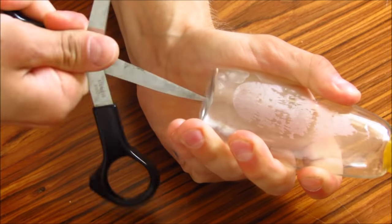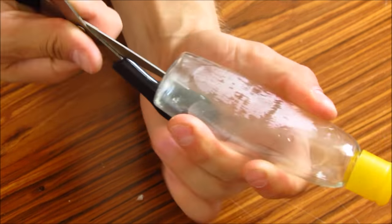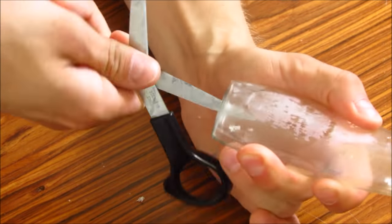Next, take your travel size shampoo bottle. This one is Johnson's Baby, and poke a hole at the bottom of it just like you see here.